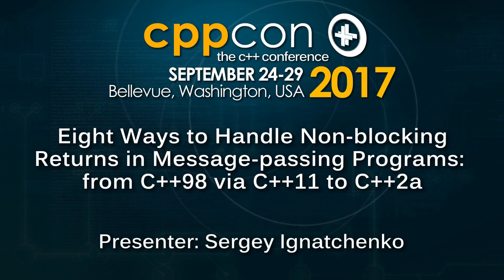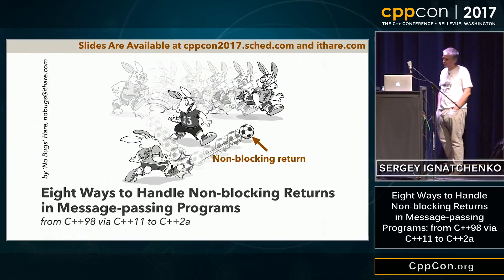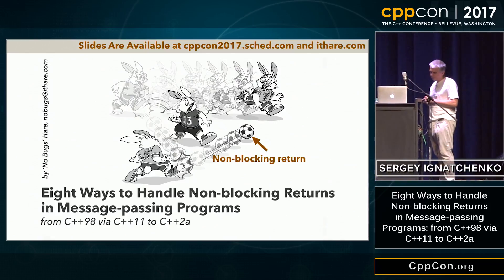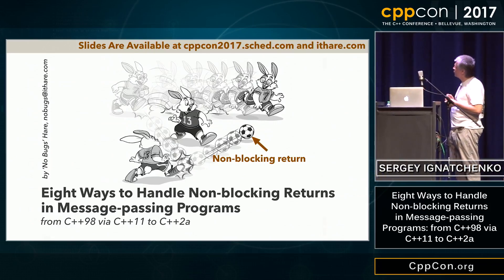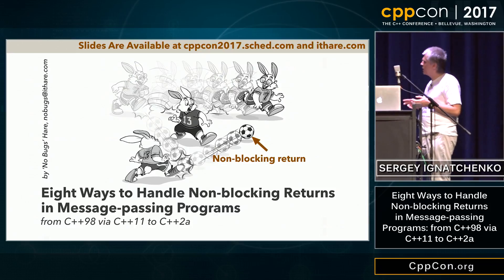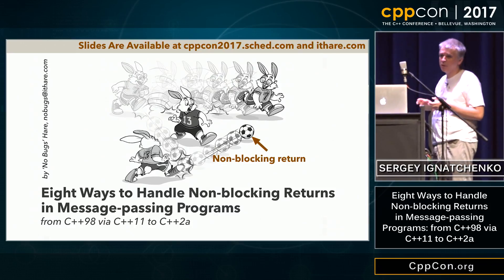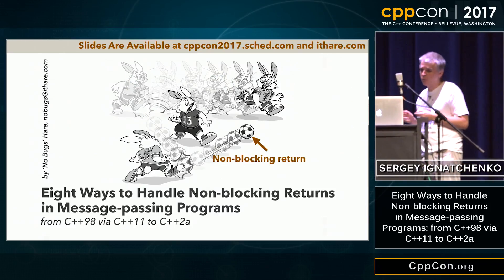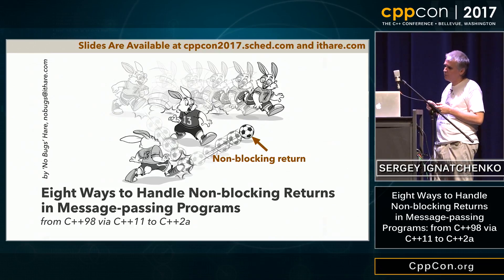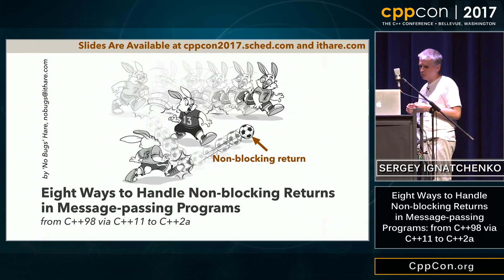Hello, almighty all. Today I'll be speaking about message-passing programs, in particular reactors, and about eight different ways to handle non-blocking returns in them. In addition, I'll try to make a very brief overview of existing proposals under consideration by the C++ committee, also known as WG21, and we'll try to demonstrate how they fit into our non-blocking returns.